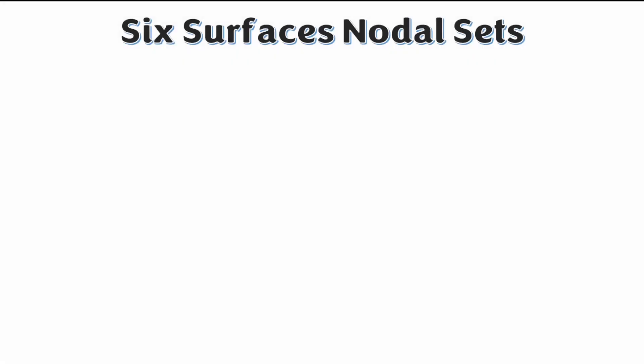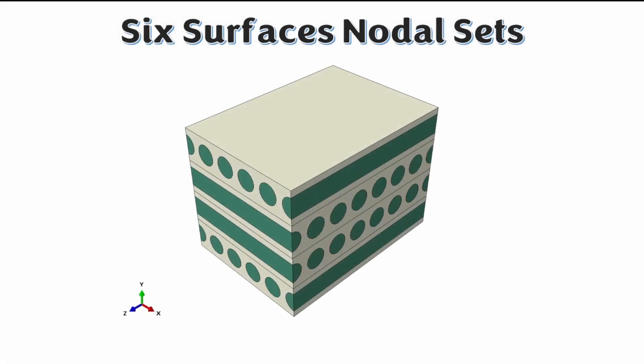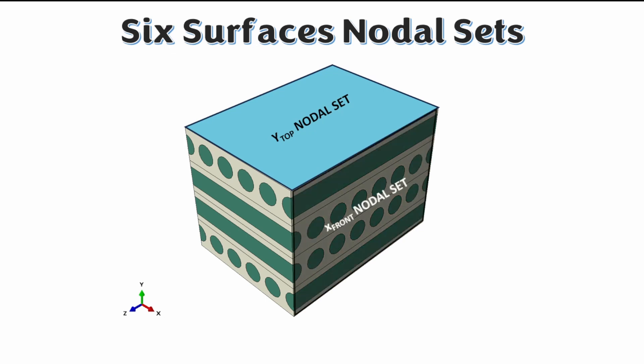The first thing you need to do in applying the boundary conditions is to identify the six surfaces as nodal sets. Considering this system, we need to identify the top surface — which we'll call the Y top nodal set — the X front surface, and the Z front surface. There will also be three surfaces on the hidden side of this RVE.